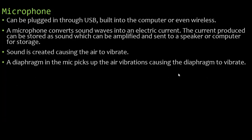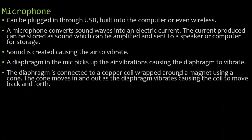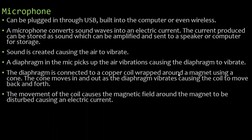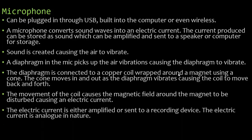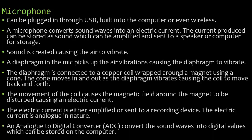The diaphragm in the mic picks up the air vibrations, causing it to vibrate. The diaphragm is connected to a copper coil wrapped around a magnet using a cone. The cone moves in and out as the diaphragm vibrates, causing the coil to move back and forth. The movement of the coil disturbs the magnetic field around the magnet, causing an electric current. The electric current is either amplified or sent to a recording device. Since the current is analog and we want to make it digital, an analog to digital converter will convert the sound waves into digital values — zeros and ones — which can be stored on the computer.